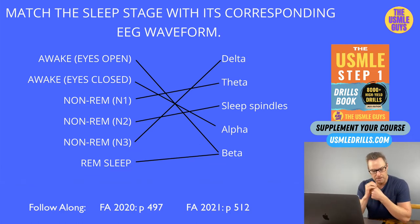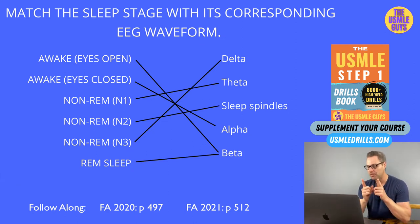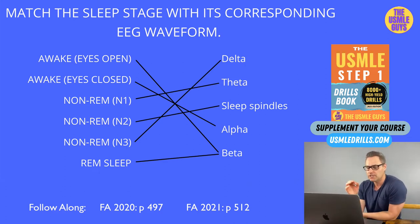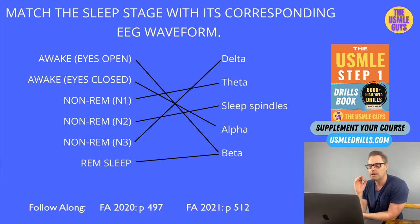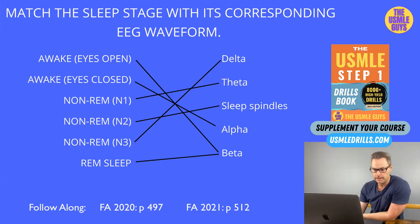In people with depression, the amount of time spent in REM sleep actually increases, but there's a decreased REM latency. The amount of time spent in N3 decreases, and one of the key features of major depression is repeated nighttime awakening and early morning awakening. In the elderly, there's a decrease in time spent in both REM and N3 sleep, with increased sleep latency and increased early morning awakening. Make sure you know those — it's always tested.